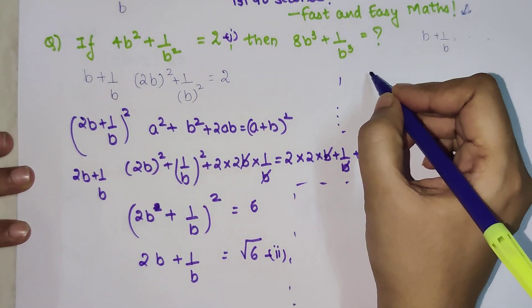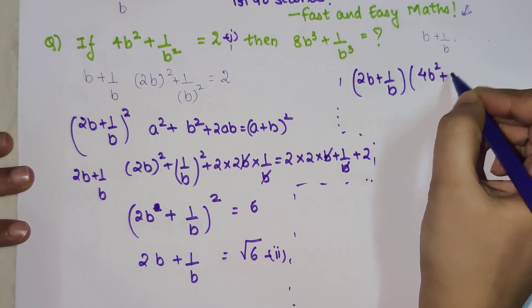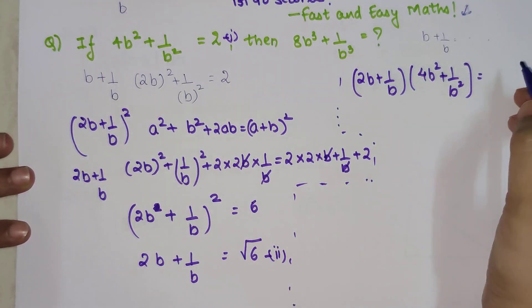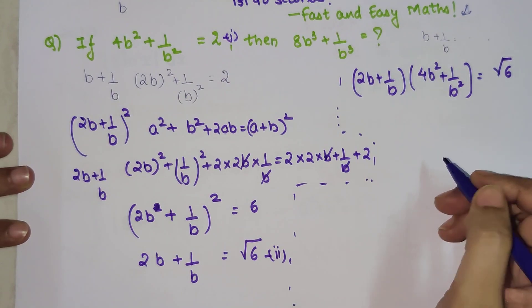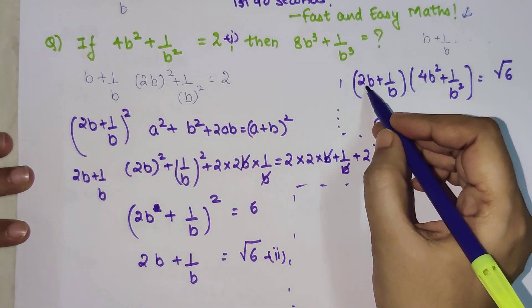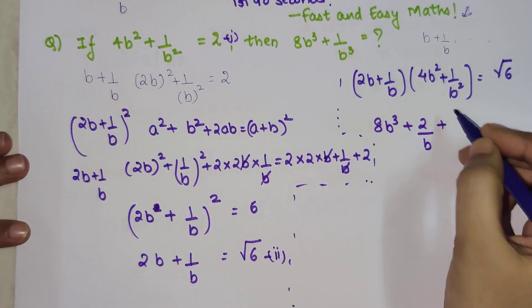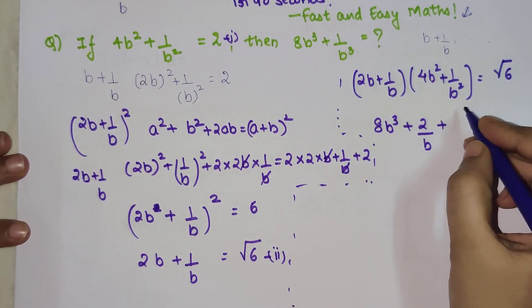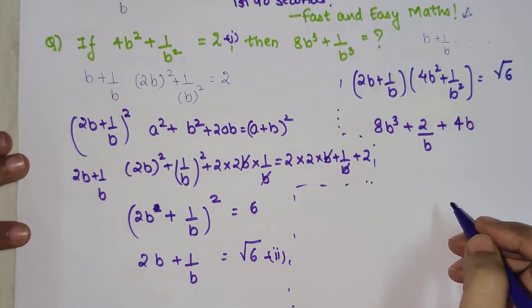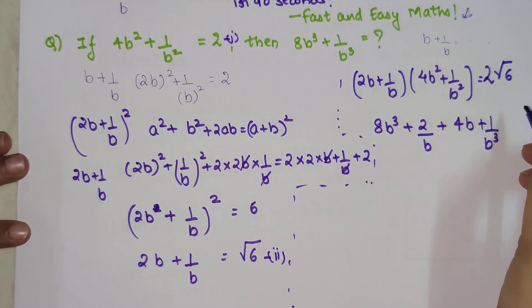Now in order to get to 8b³ + 1/b³, all we just need is we just need to multiply this equation, equation 2, with the equation given which is 1. So what do we get when you do that is (2b + 1/b) × (4b² + 1/b²) = √6 × 2. On expanding I will get 8b³, then I get 2b multiplied with 1/b² so I will get +2/b, plus 4b, and when I multiply 1/b with 1/b² I get +1/b³, and here I will get 2√6.